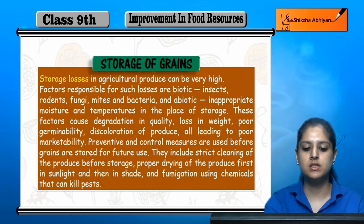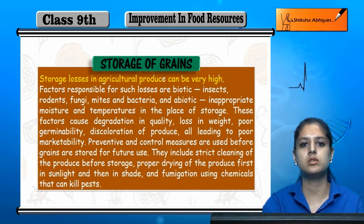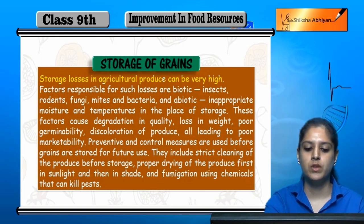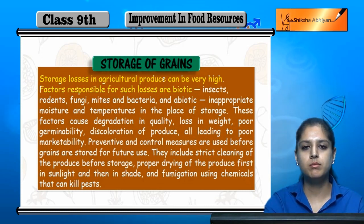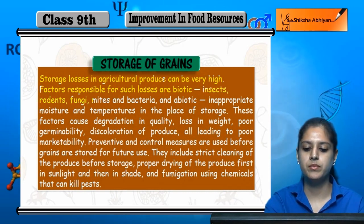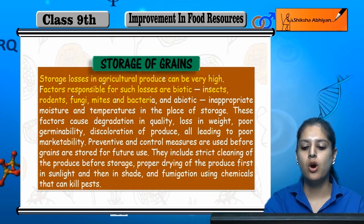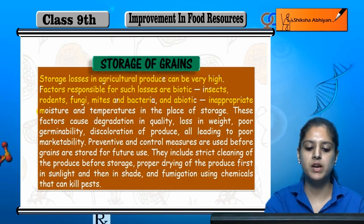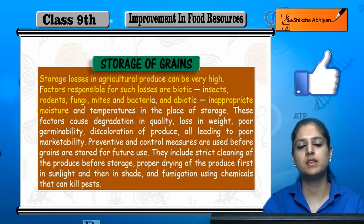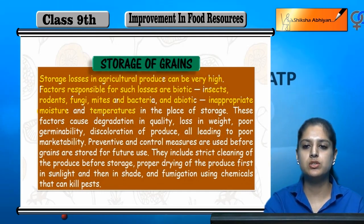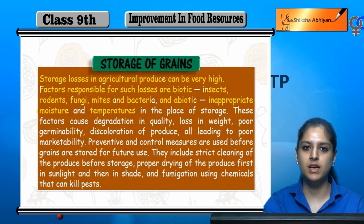Storage losses in agriculture can be very high. When grains are stored, there is a lot of loss. The factors can be biotic — living organisms like insects, rodents, fungi, mites and bacteria — and abiotic — non-living factors like inappropriate moisture. If moisture is more or less than needed, the grain can be poor. If the temperature is not appropriate, it can also cause loss.